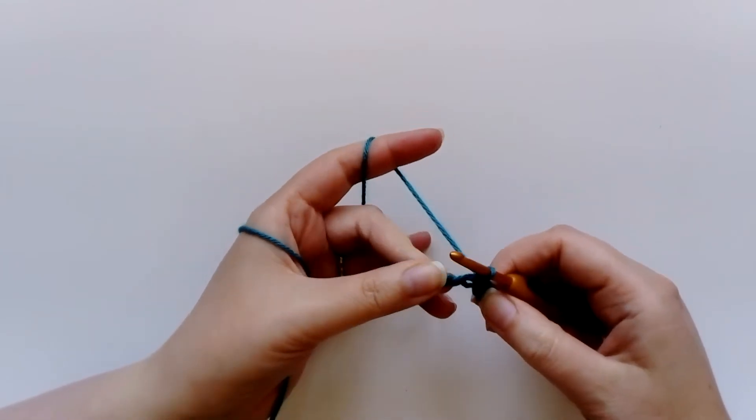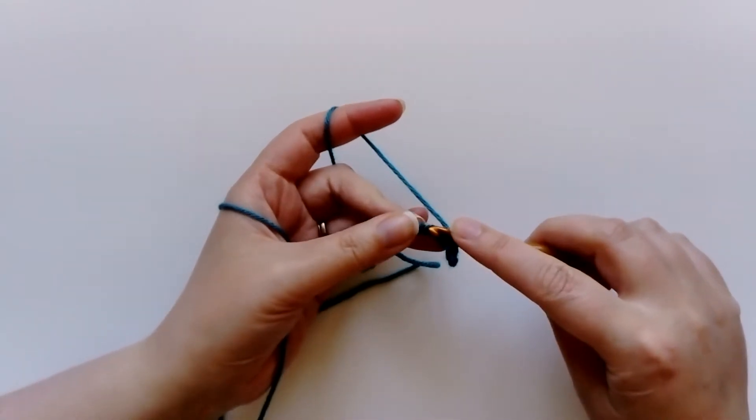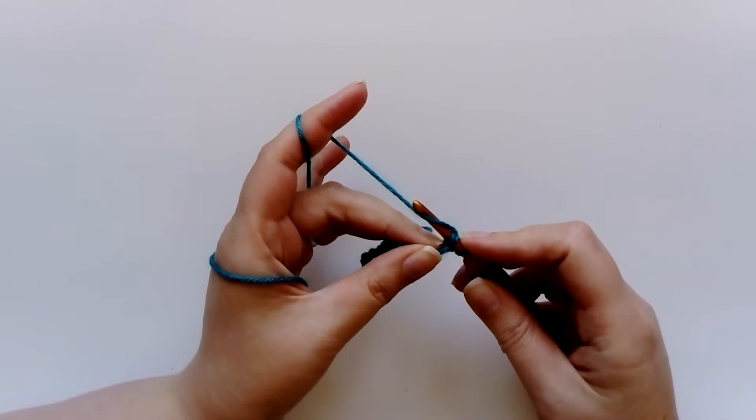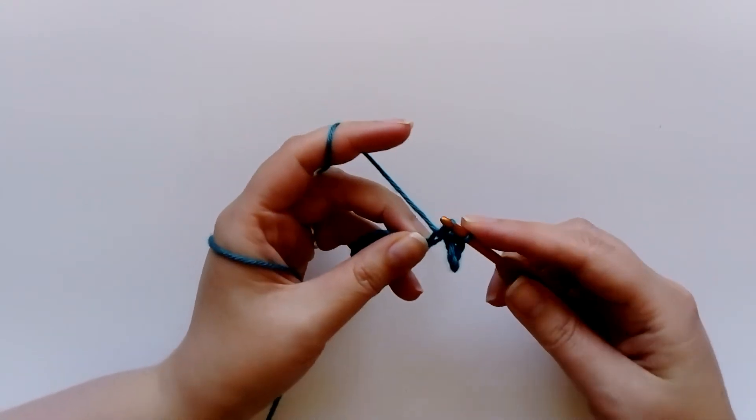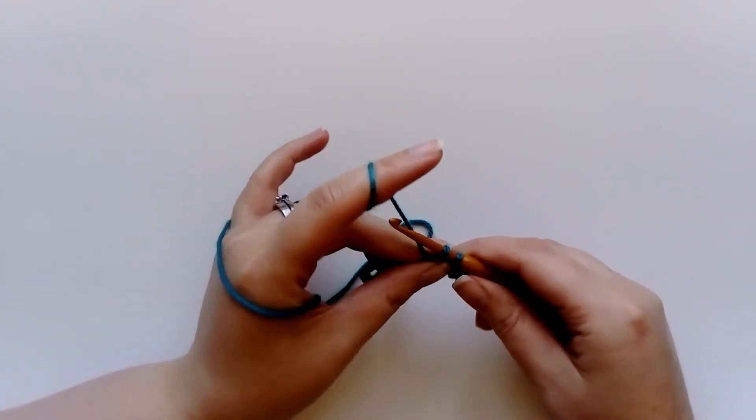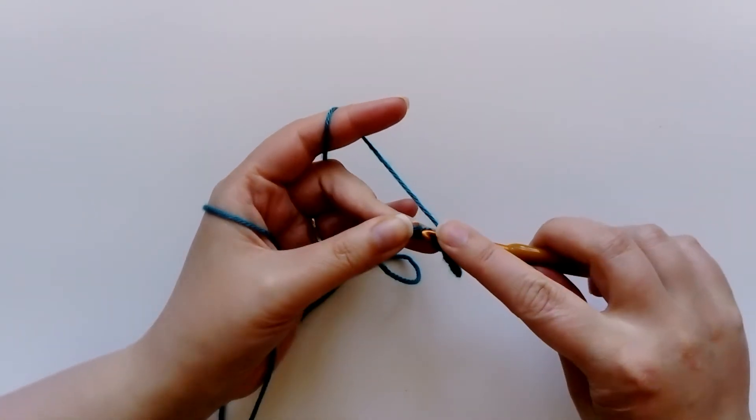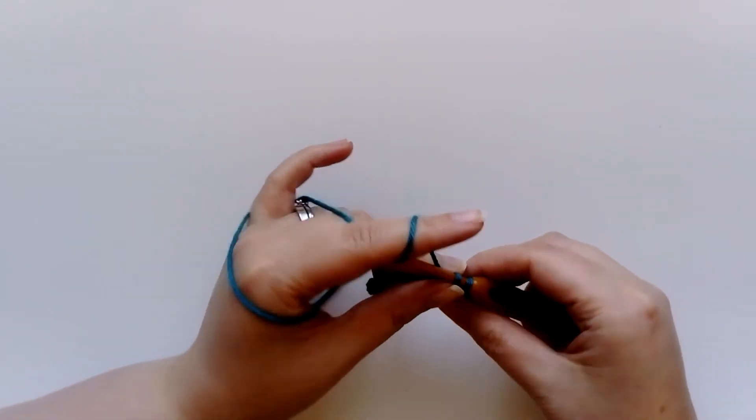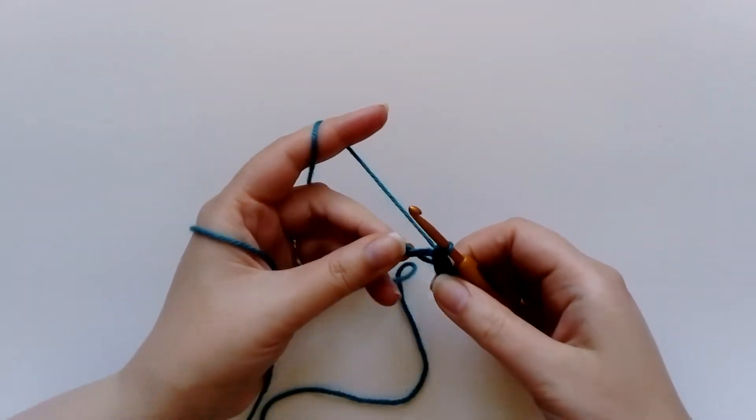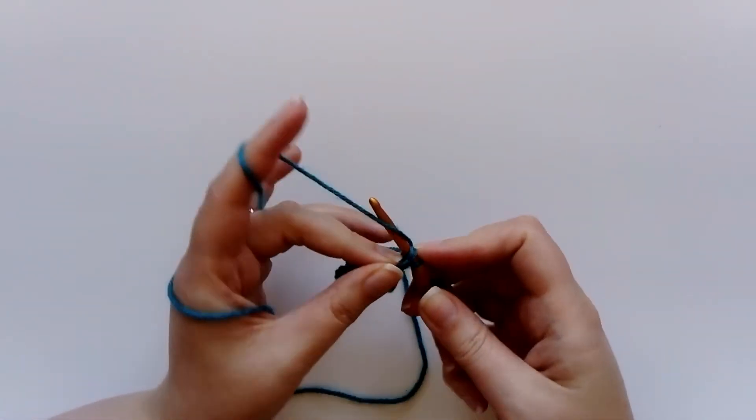One more time: insert the hook, wrap the yarn and pull it through for two loops, wrap it over and pull it through two. And I would do that in every stitch until I get to the end of my chain.